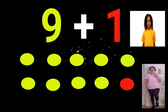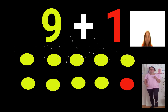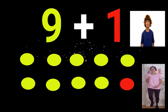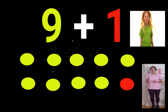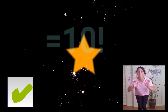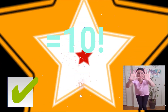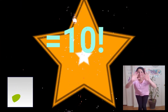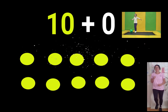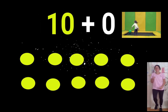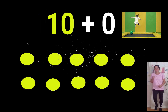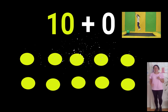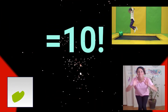Nine plus one equals ten. Ten plus zero equals ten.